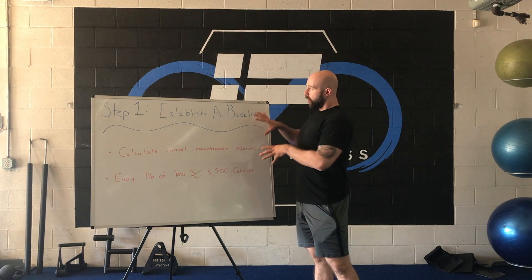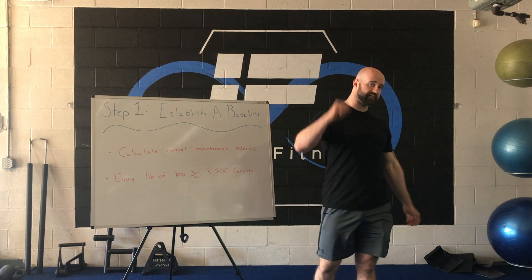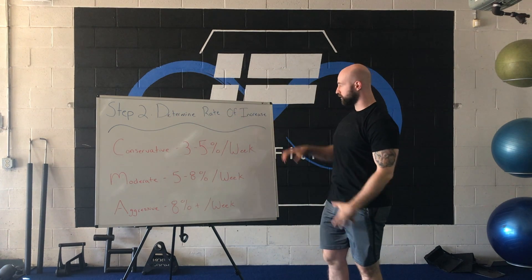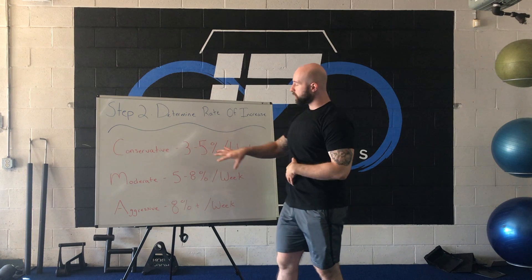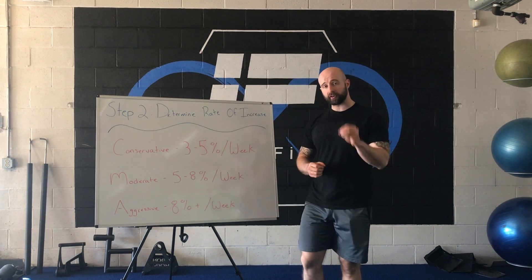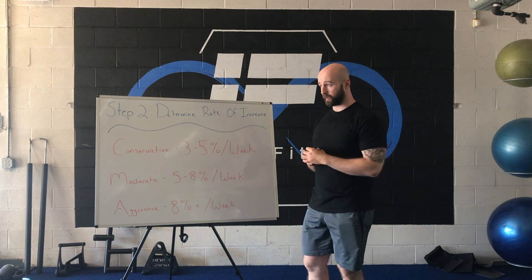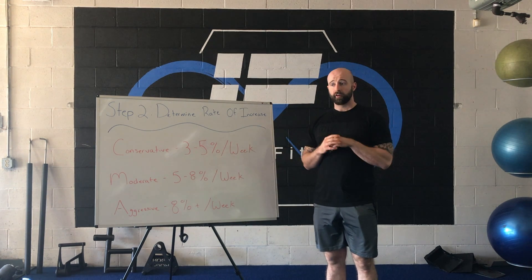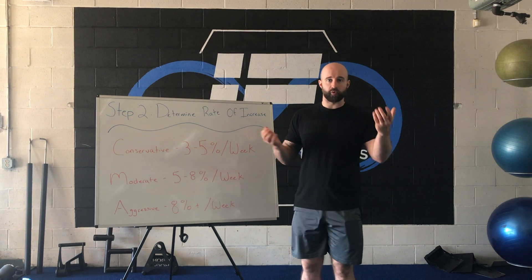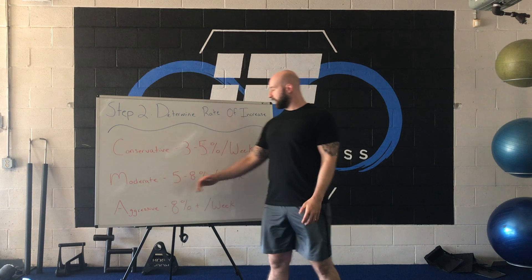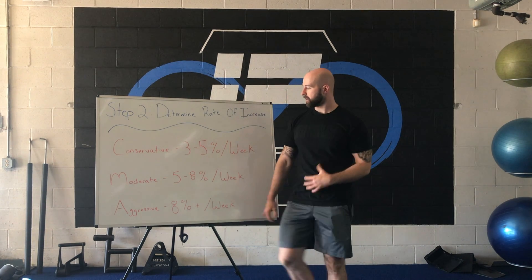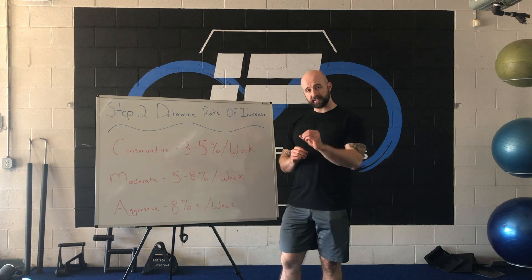Once you have calculated your current metabolism, it's time to move on to step two: determining your rate of increase each week. There are three ways we can go about increasing calories. The first is a conservative approach — an increase of 3 to 5 percent of overall calories per week. For most people, that's going to be between 25 and 50 calories per day, which is very small — like eating three to four extra pretzels. The second is a moderate approach: an increase of 5 to 8 percent of overall calories per week.